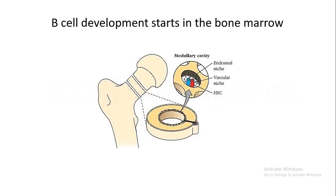Hi everyone. In this video, I will discuss B-cell development. B-cell development starts in the bone marrow. Bone marrow is the primary lymphoid organ where immune cells develop.